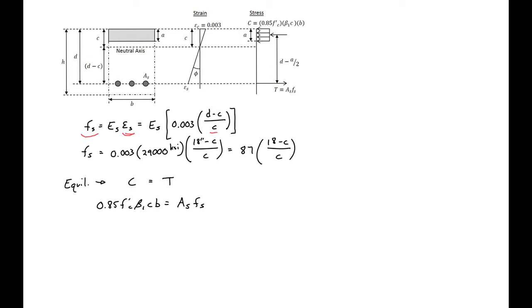Next we can go back to equilibrium, so compression equal to tension. Nothing changes on our compression side, that'll be the same, and on our tension side we'll now just use the steel stress expression from above instead of the yield stress. So we can start plugging in all of our values. We have 0.85 times f'_c, 4 ksi, times our beta_1 for f'_c is 0.85. We'll leave C in variable form. So our b is 12 inches, equal to the area of our steel, 6.75 square inches, and then our f_s expression, so 87 times 18 minus C divided by C. So this then is just going to be 34.68C equal to 587.25 times 18 minus C divided by C.